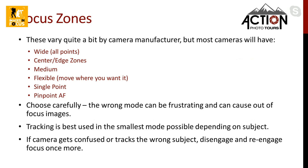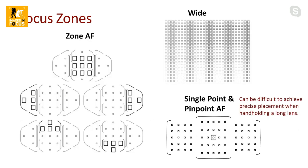Here is that zone autofocus where you can set it to center, left edge, or right edge — useful if a subject is moving in a particular direction — or top or bottom. The wide setting is usually not as useful because the camera makes a lot of decisions for you and may not focus where you want. You can also choose a single point or pinpoint autofocus. One caveat: single point autofocus can be difficult to use precisely when you're hand-holding a long lens and getting excited — you have to be very steady.